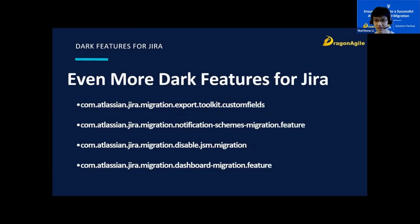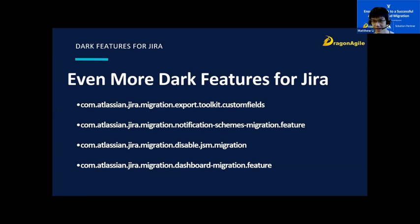Here are the last four dark features for Jira. The first involves an app called Jira Toolkit — using that dark feature, you're able to migrate custom fields that were made by this app. For the second one, you're able to migrate notification schemes, but this feature is still under development. The third disables the Jira Service Management migration, and is usually used for test migrations if you suspect that the JSM migration is causing something else to break. For the last one, normally you are not able to migrate system dashboards or any third-party gadgets, and re-migration of dashboards could cause some issues — each dashboard needs to have a unique name. This is recommended to be the final step of the migration using a dummy project, and could also require some post-migration work since this feature is still under development.